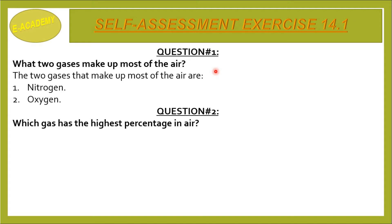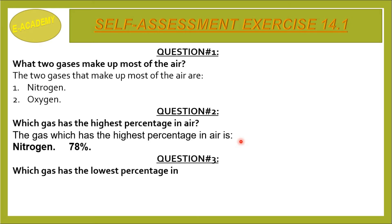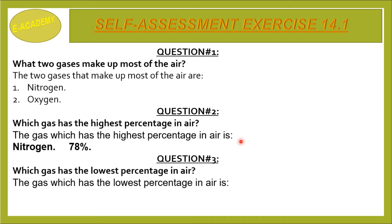Question Number 2: Which gas has the highest percentage in air? The gas which has the highest percentage in air is Nitrogen, that is 78%. Question Number 3: Which gas has the lowest percentage in air? The gas which has the lowest percentage in air is Hydrogen, that is 0.000005%.